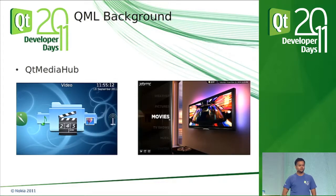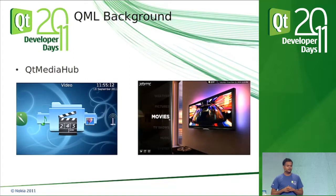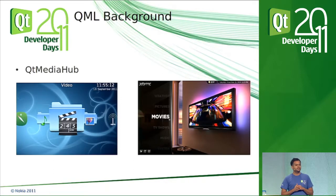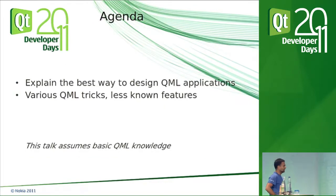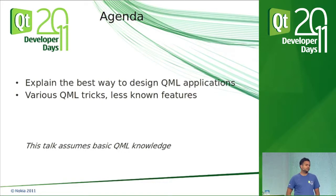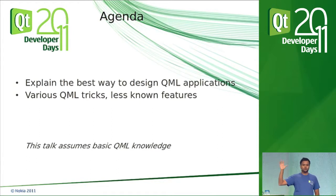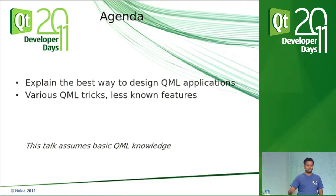One of the lessons I learned is that QML is very easy to write but hard to read. This happens because a lot of us are very new to QML, and we all bring our own ideas about what declarative means, how code should be structured, and how different things should be done. So when you read another person's code, it's just really hard to understand. My agenda today is to explain the best way to design QML applications and give out some tricks you can use. This is an advanced talk — I'll assume you already know QML.